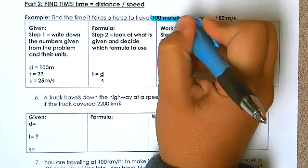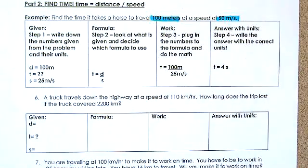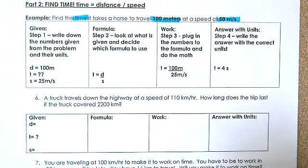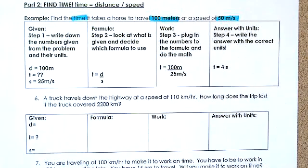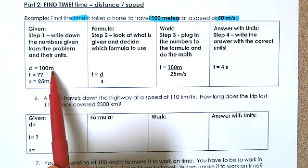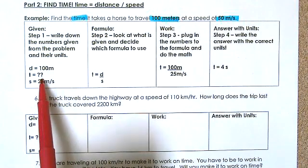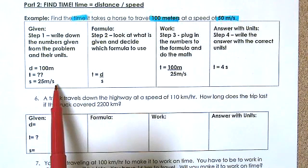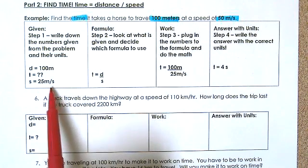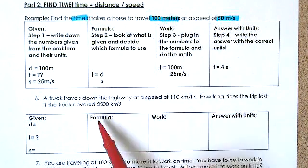100 meters is important, 50 meters per second is important, and we're looking for the time. Step one: write down the numbers given with their units. So 100 meters is the distance, time is what we're looking for (question mark), and the speed is 25 meters per second.